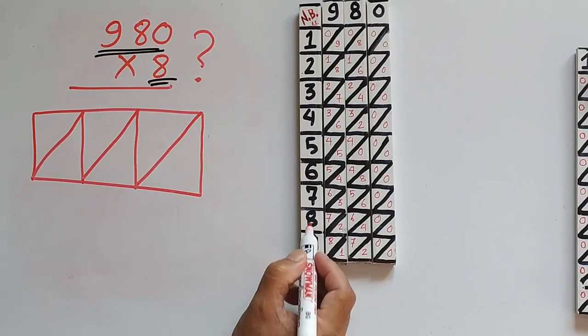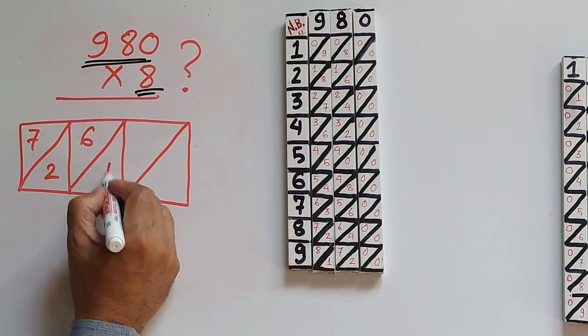In the 8th row we have the numbers 7 and 2, 6 and 4, 0 and 0.